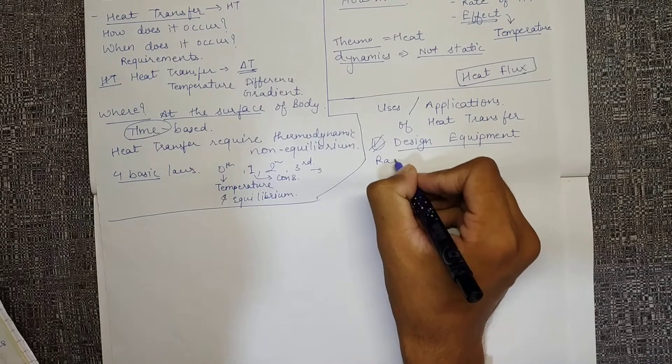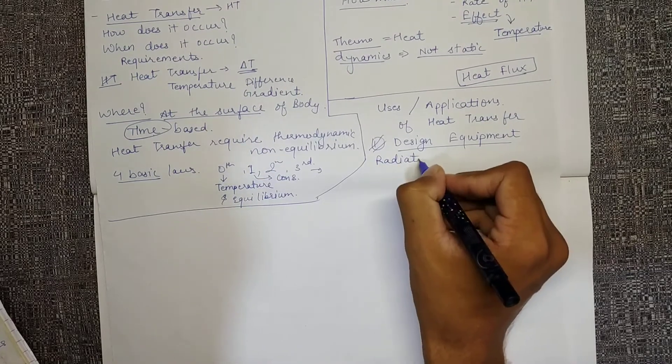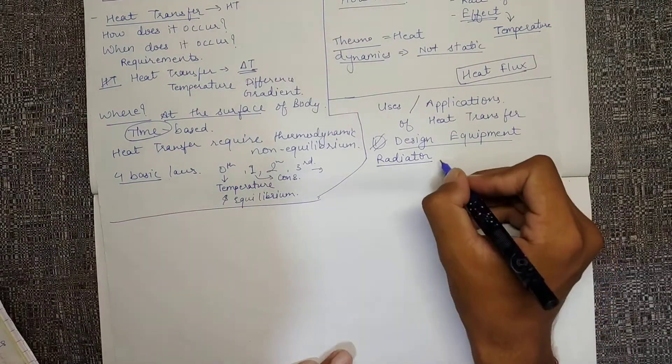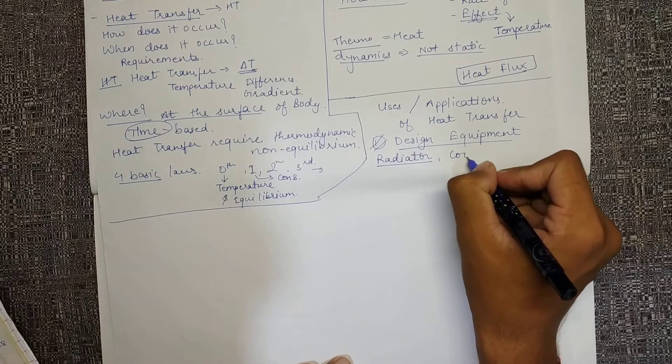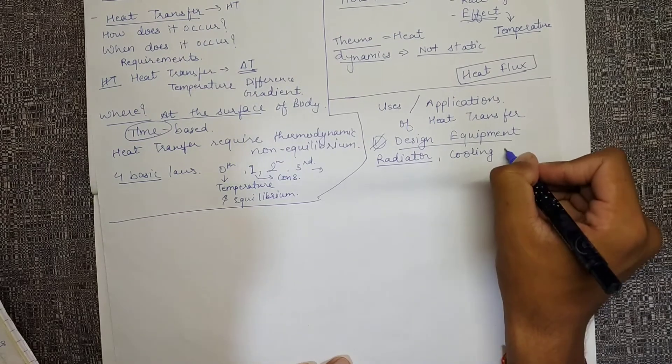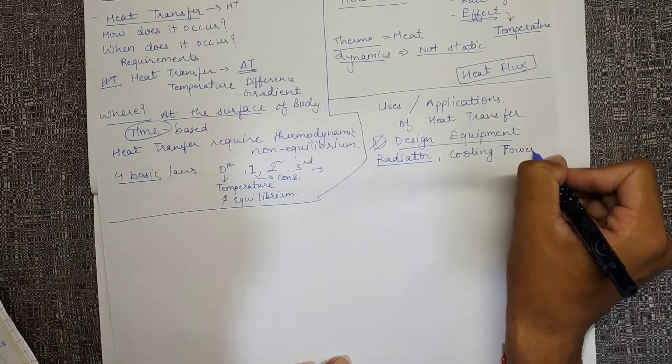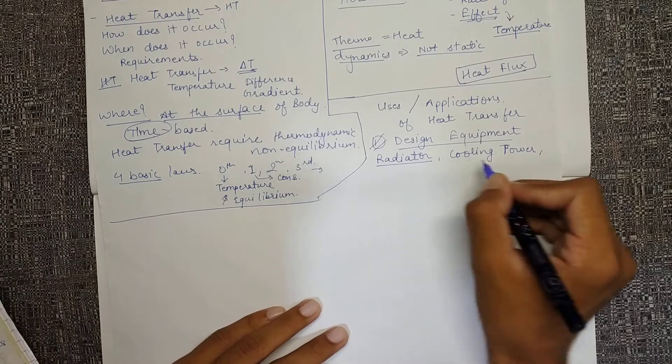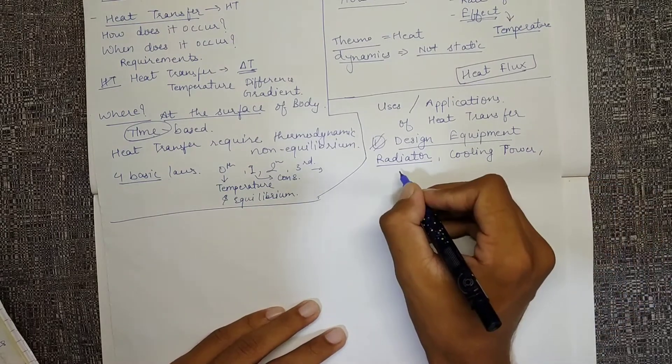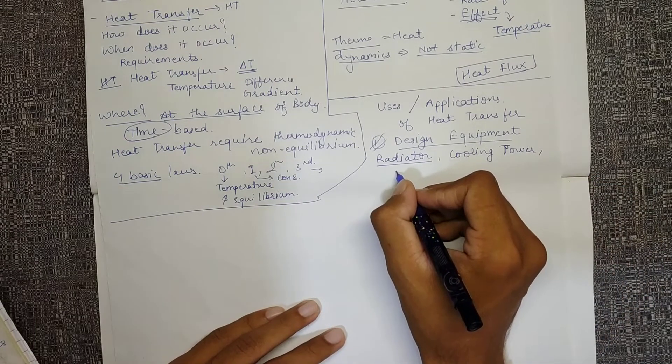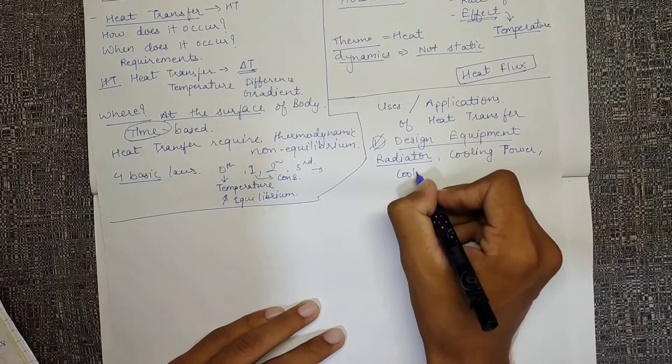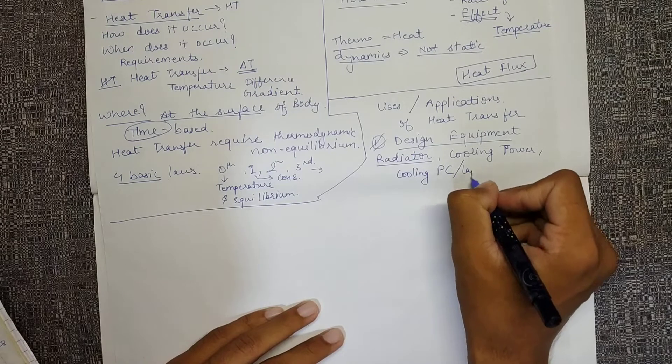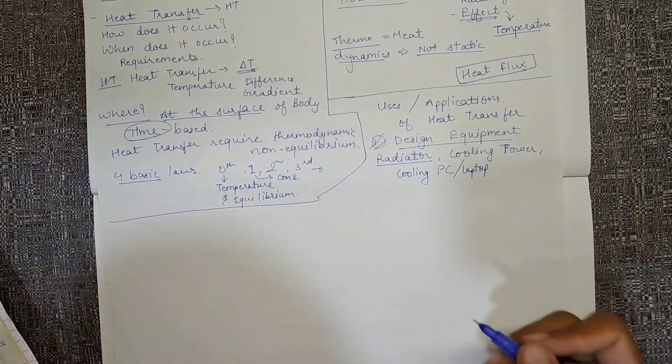The radiator we have in our car to cool the engine should be designed using the concepts we'll study here. Then we have cooling tower in our plant. A radiator is involved, cooling tower is involved, then how to cool PC or laptop. So there are a lot of different things.